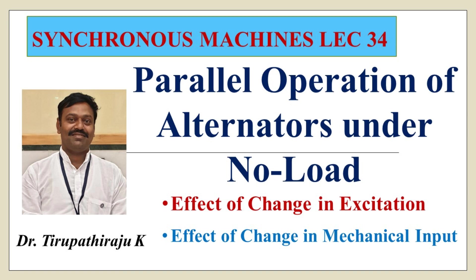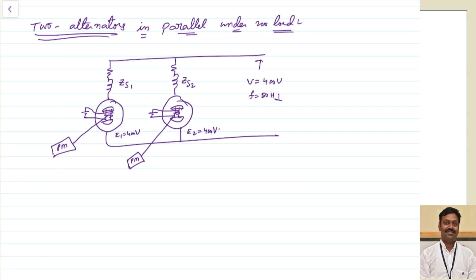Good morning all. Today we are going to discuss the parallel operation of alternators under no load conditions. Let us assume there are two alternators - alternator one and alternator two. Let us assume both EMFs generated by the alternators are the same, and Z1 and Z2 are the respective synchronous impedances. Let us assume the terminal voltage is 400 volts and frequency is 50 Hz.